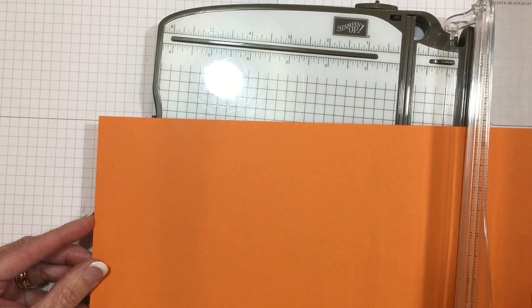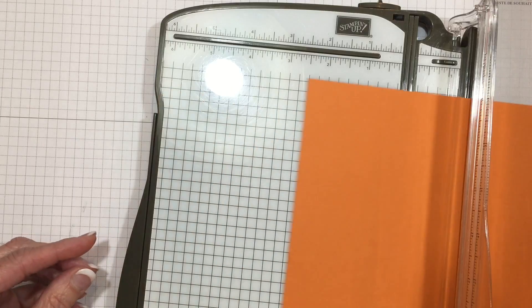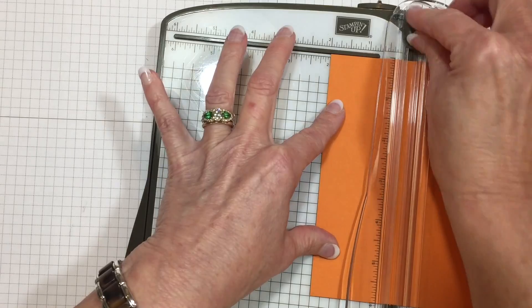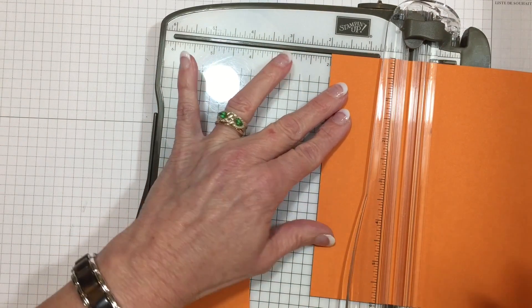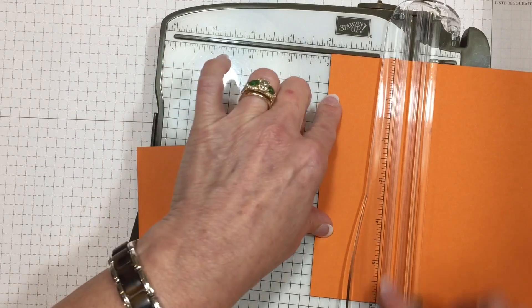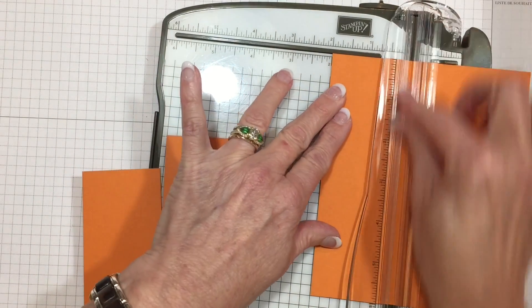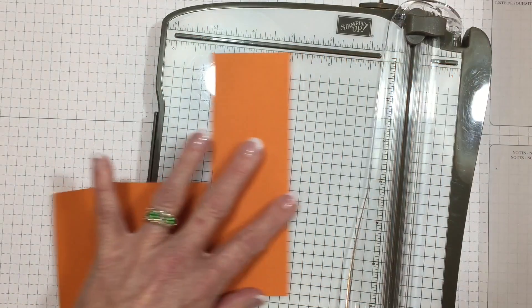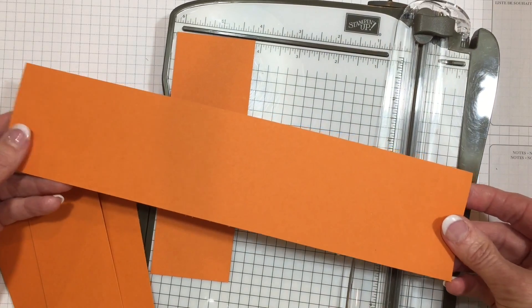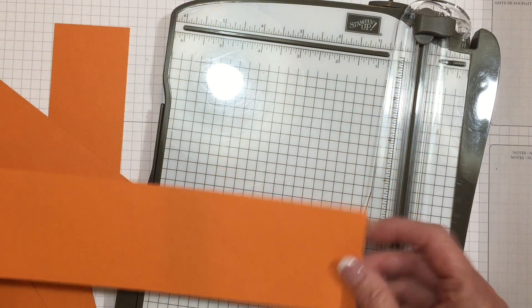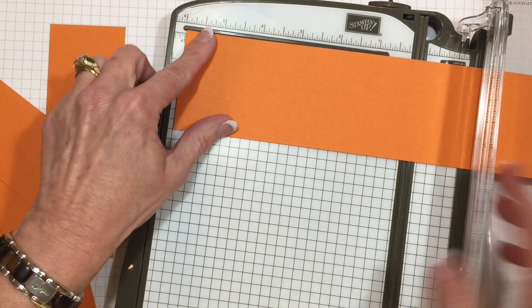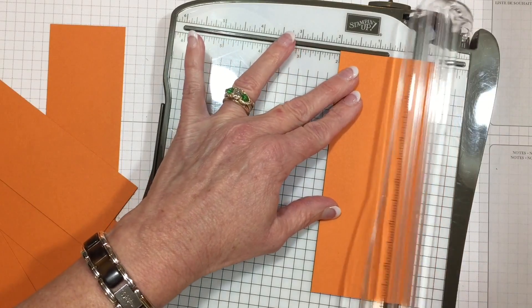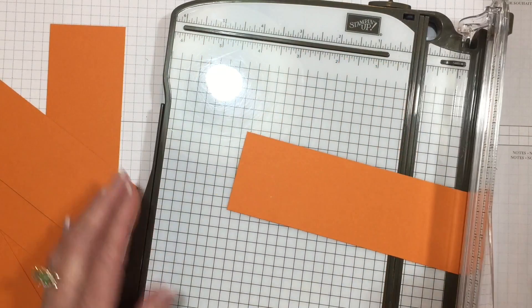Then we're going to rotate the cardstock and cut it at two inches. We're going to do that for the entire sheet of paper. Now remember this piece of paper that we set aside, we're actually going to also use this piece.